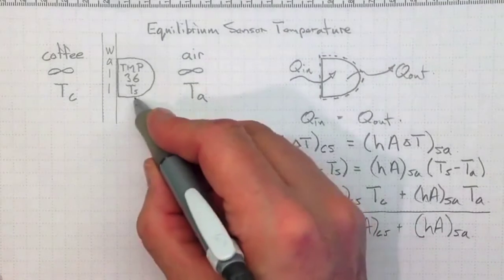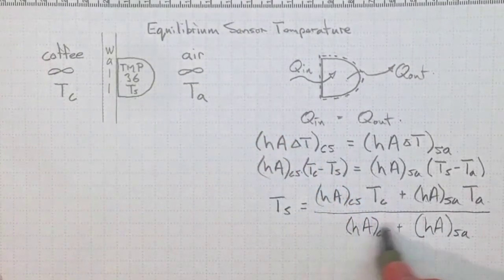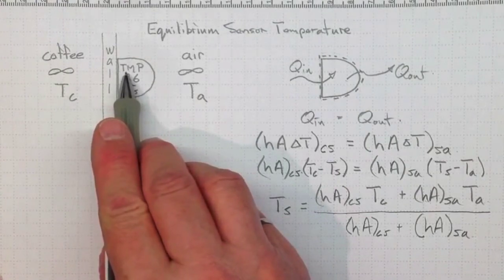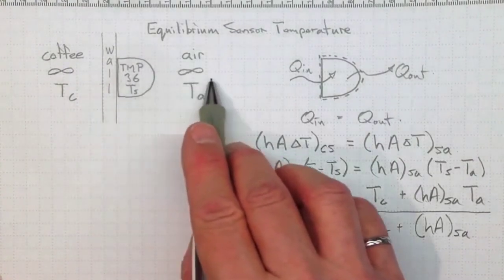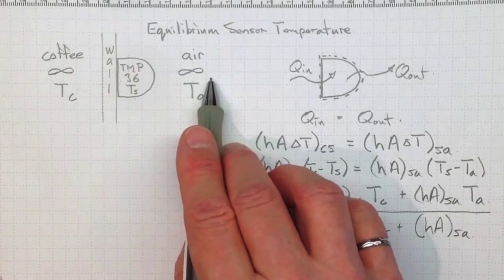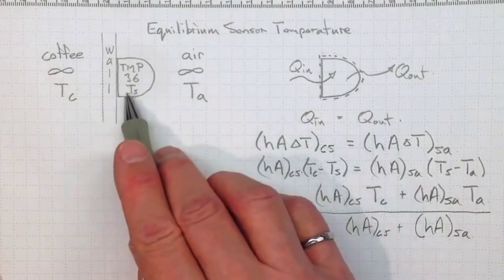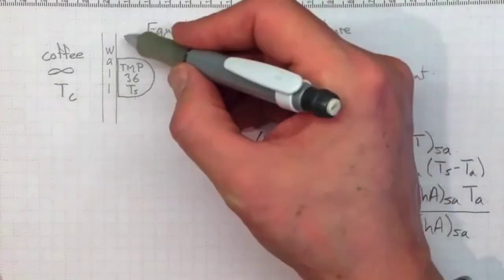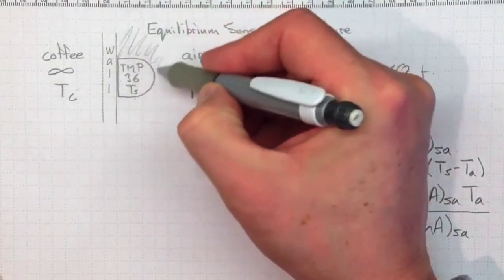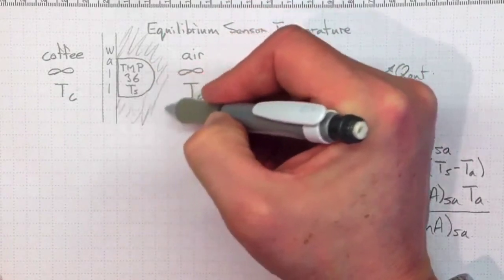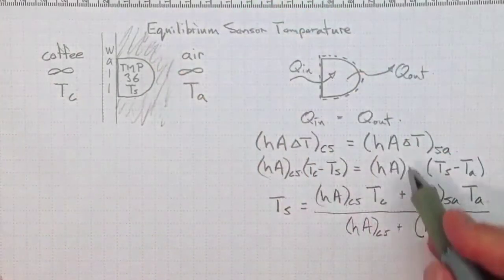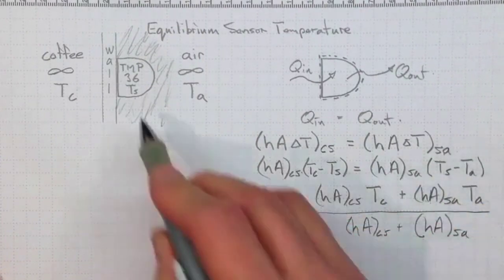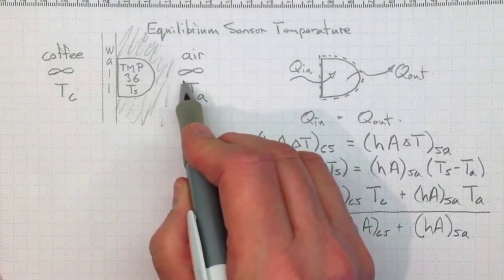So this tells us that the sensor temperature is going to be a weighted average dependent on how good this interface is at transferring energy compared to how good that interface is. Now when you're making a mounting, if you want the temperature sensor to be really close to the temperature of the coffee, then let's put some insulation on that sensor to reduce the hA for the sensor to the air side and thus reduce the heat transfer on this side.